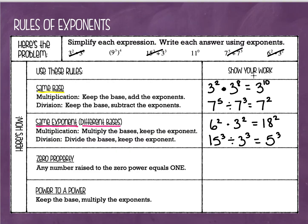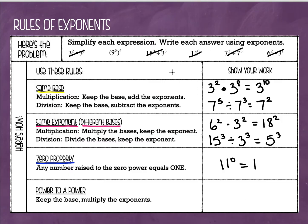The zero property is a bit strange for some people to understand, but here's the rule: any number raised to the zero power equals one. Looking up here, we find eleven to the zero power — anytime you have a number to the zero power, it just equals one. It doesn't matter what the number is — how big, how small, positive, negative — once you see that exponent of zero, it equals one.